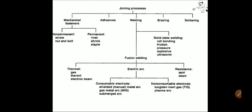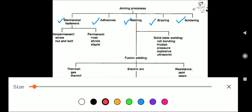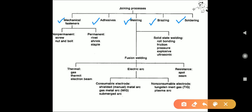The joining process is classified into five groups: first, mechanical fasteners; second, adhesive; third, welding; fourth, brazing; and fifth, soldering. Mechanical fasteners are further classified into two categories: non-permanent and permanent. Welding is also classified into two sub-categories: fusion welding and solid state welding.